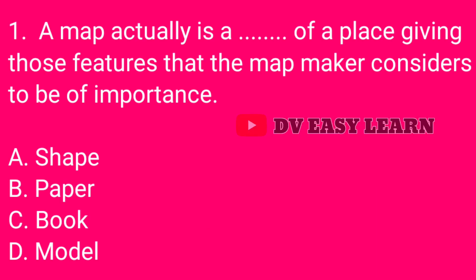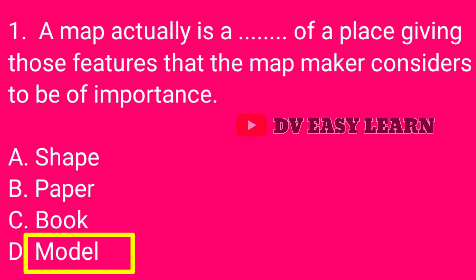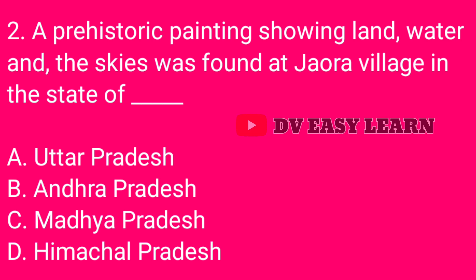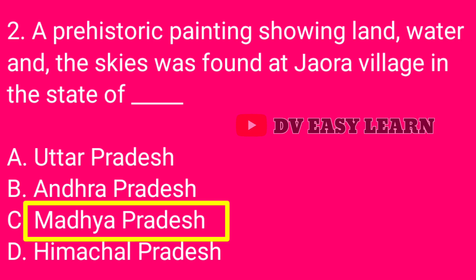Question number 1: A map actually is a dash of a place giving those features that the mapmaker considers to be of importance. Correct answer: Model. Question number 2: A prehistoric painting showing land, water and the skies was found at Jawara village in the state of — correct answer: Madhya Pradesh.